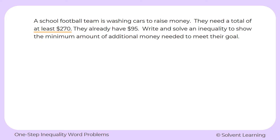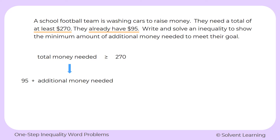They need at least $270, so we can write that as: the total money needed is greater than or equal to $270. We also know they already have $95. So that total money breaks down into 95 plus the additional money they need, and altogether that has to be greater than or equal to $270. Instead of using the words 'additional money needed,' we can use the variable m. So we write: 95 plus m is greater than or equal to $270.